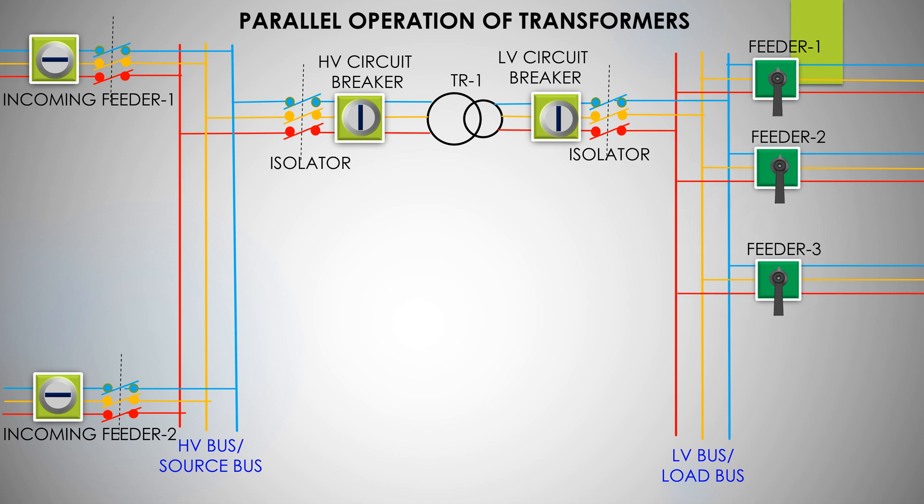To explain the necessity of parallel operation of transformer, let us suppose an arrangement at one substation where a transformer is engaged to feed load getting power from a source through two numbers of incoming feeders and catering load through three numbers of LV feeders. If the amount of power to be catered is greater than that supplied by one transformer TR1, it becomes necessary to employ two or more transformers in parallel.